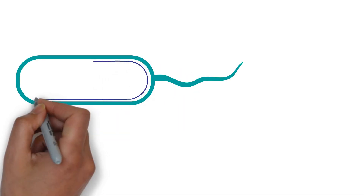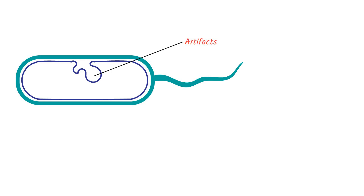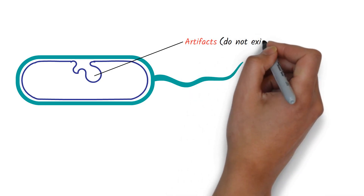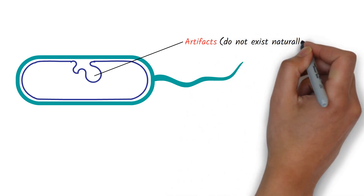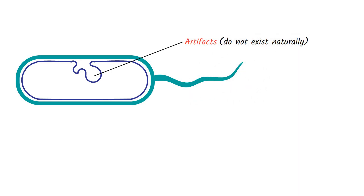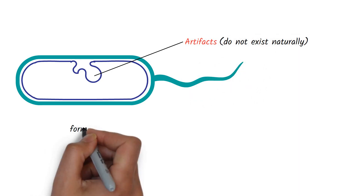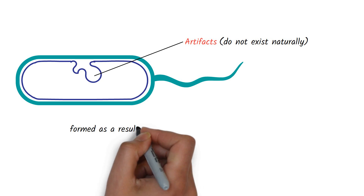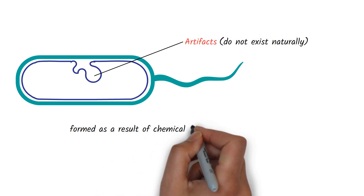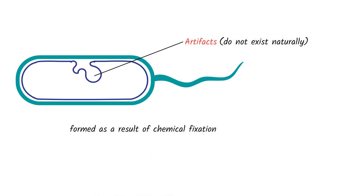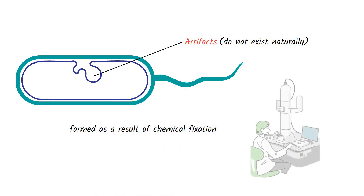There is no clear understanding of how mesosomes are formed. It is said that mesosomes are artifacts, which means they do not exist naturally in the cell. They are formed as a result of chemical fixation in the preparation process for electron microscopy.